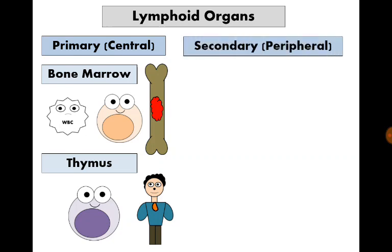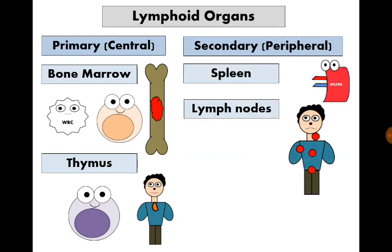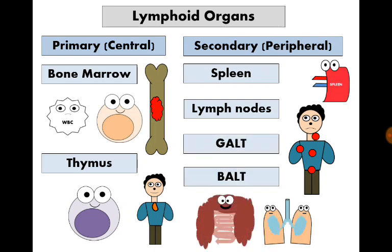The secondary — or peripheral — lymphoid organs are the sites where B and T lymphocytes meet different microbes. If any microbe enters the body, it is drained by lymph to these organs, where B and T lymphocytes are waiting. These organs are the spleen, lymph nodes in different parts of the body, gut-associated lymphoid tissue including tonsils, adenoids, appendix, and Peyer's patches, and bronchus-associated lymphoid tissue.